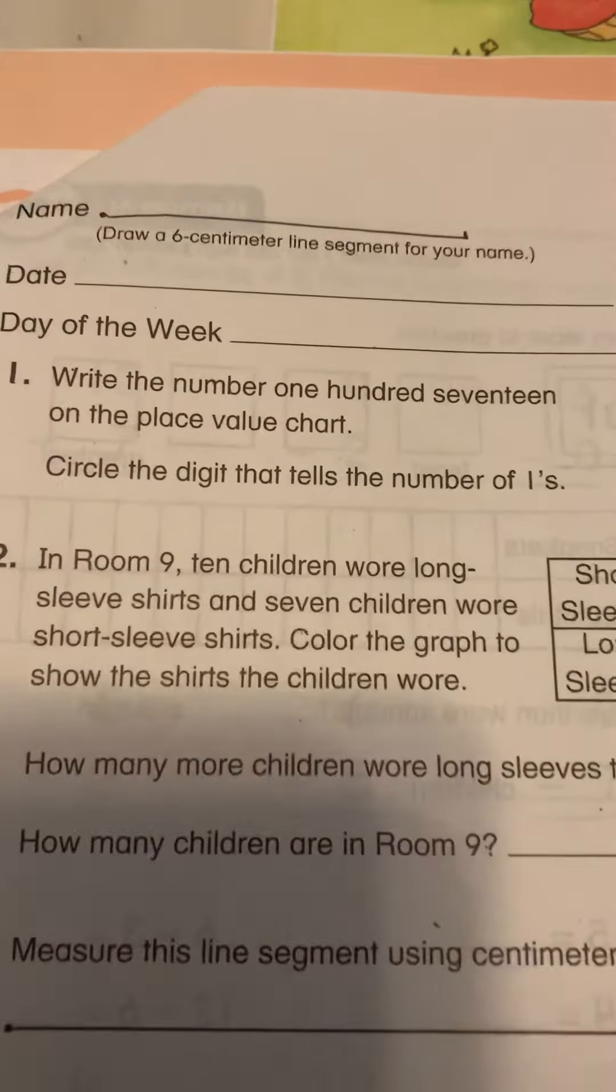And we only have to make four tally marks. One, two, three, four. Done. Number one. Write the number 117 on the place value chart. What does 117 look like? 17 looks like this, and then you just put a 100 in front of it. So 117.